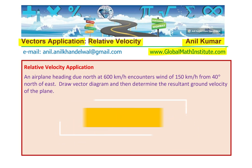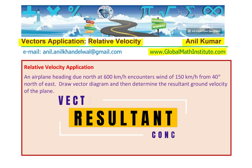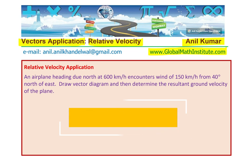In this playlist, you can find many videos where related questions will be discussed at length. The question before you is: an airplane heading due north at 600 kilometers per hour encounters wind of 150 kilometers per hour from 40 degrees north of east. Draw vector diagram and then determine the resultant ground velocity of the plane. You can always pause the video, answer the question and then look into my suggestions.